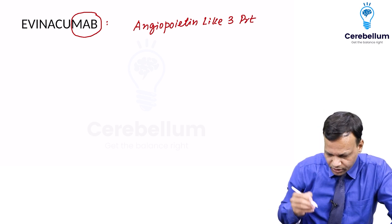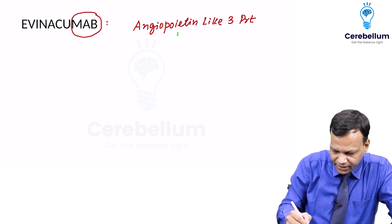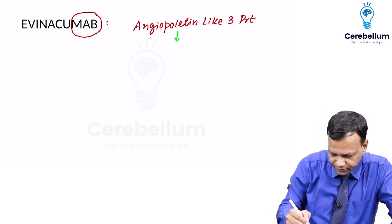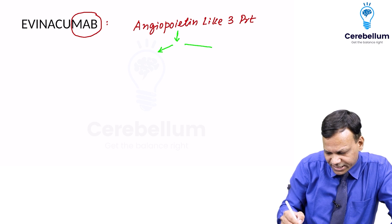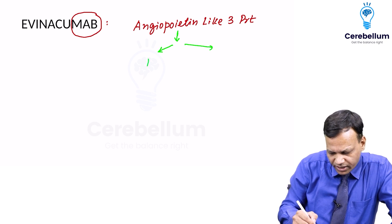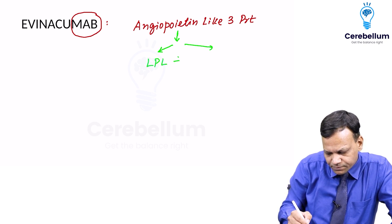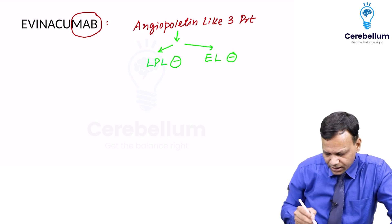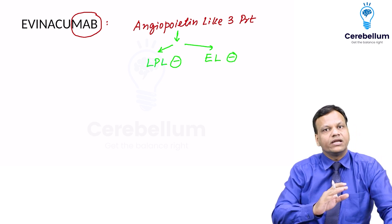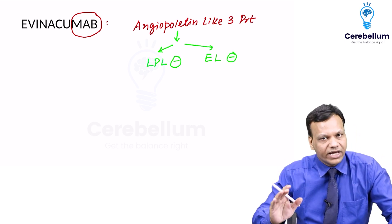Now what is the function of this protein? Normally this protein inhibits two enzymes: one is lipoprotein lipase and the second is endothelial lipase. So normally this protein inhibits these two enzymes.